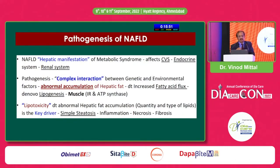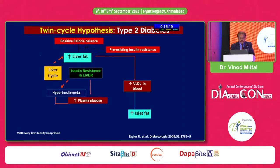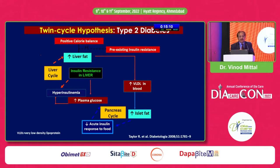There is a complex relationship involving lipotoxicity. Abnormal release of free fatty acids in the blood are taken up by the beta cells, leading to toxicity of beta cells as well as the liver. So the quantity and quality of fat matters, leading to steatosis, inflammation, necrosis, and fibrosis. This is the twin cycle theory — free fatty acids are taken up by the pancreas, and even one gram of fat inside the pancreas leads to toxicity in the beta cells, causing insulin deficiency as well as insulin resistance.